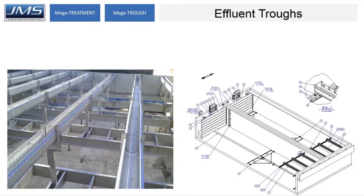Effluent trawls are used in large sedimentation basins with plenty of settling time. The quantity and length of the trough is determined based on overall length of weir required at a given flow. Multiple different support configurations are available and we custom design those from project to project. Sometimes the design of both the trawls and supports takes some risk out of the hands of the consulting engineers so they don't have to design it themselves.